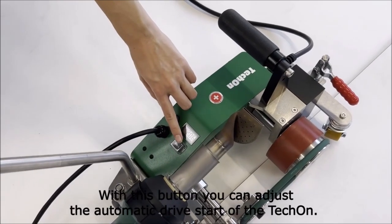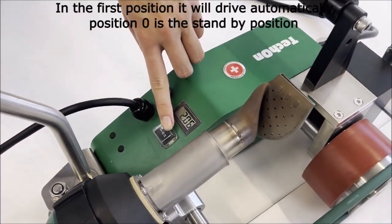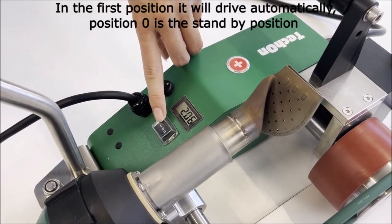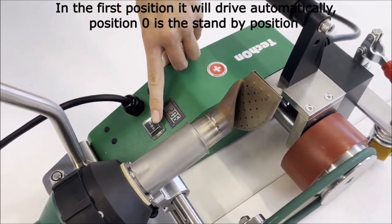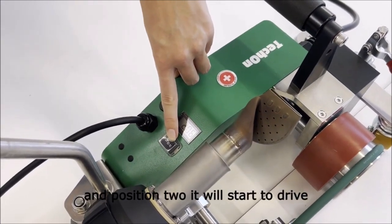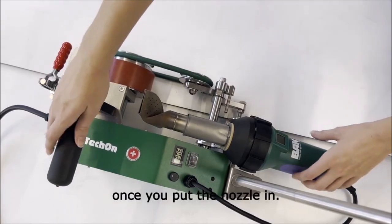With this button, you can adjust the automatic drive start of the Tecon. In the first position, it will drive automatically. Position 0 is the standby position. And position 2, it will start to drive once you put the nozzle in.